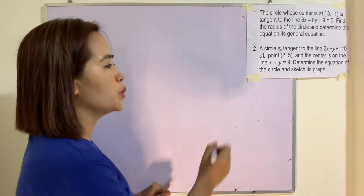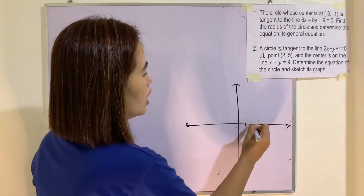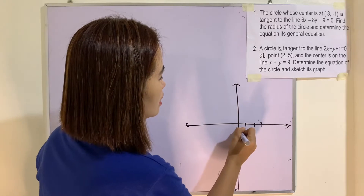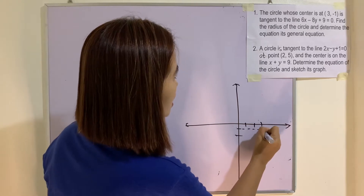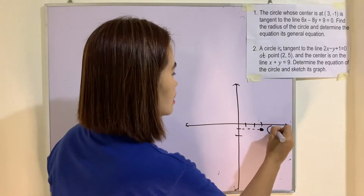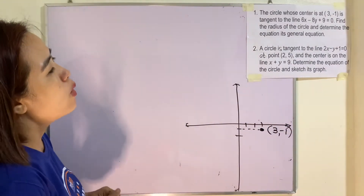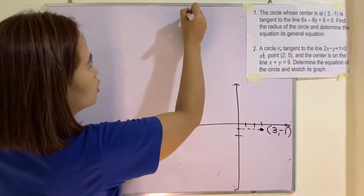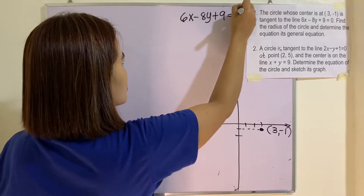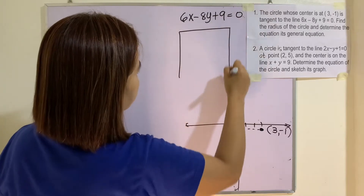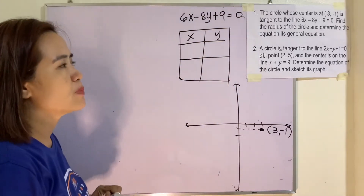The first step is to illustrate the problem. Let's draw a rectangular coordinate system. We have the point (3, -1), and that is the center of the circle. We also have the linear equation 6x minus 8y plus 9 equals 0. I will use the x-intercept and y-intercept to graph this line.